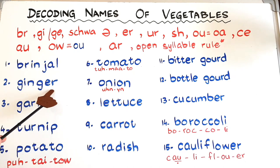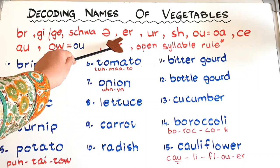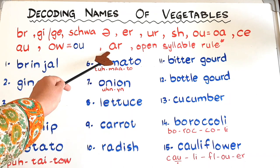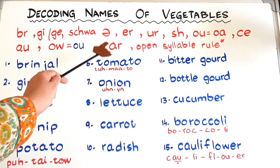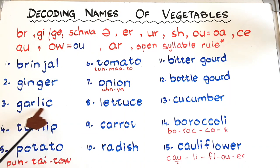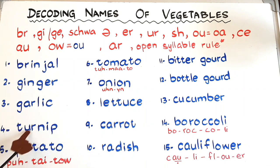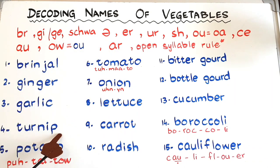The second vegetable is ginger. As I told you, the soft G rule applies: this is J in 'gin' and J in 'ger'. At number three we have garlic — notice the R sound, the 42nd sound of Jolly Phonics. The spelling is phonetic. At number four it's turnip — R sound with the 'ur' alternative spelling.